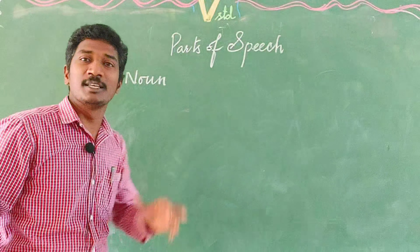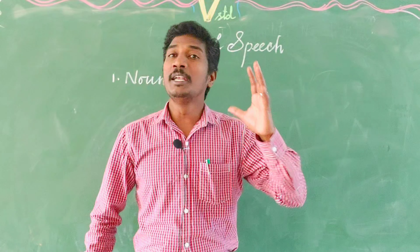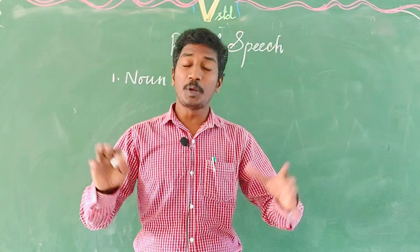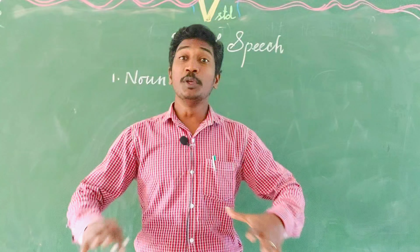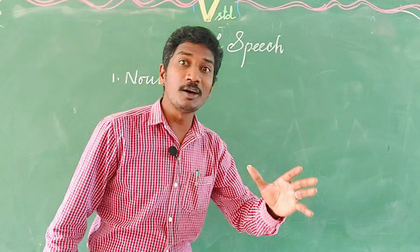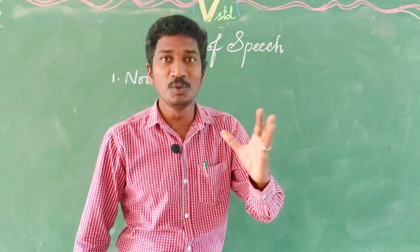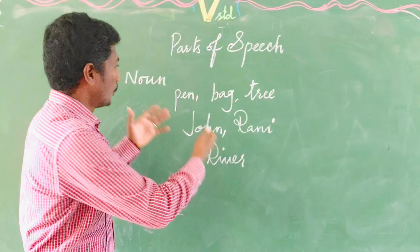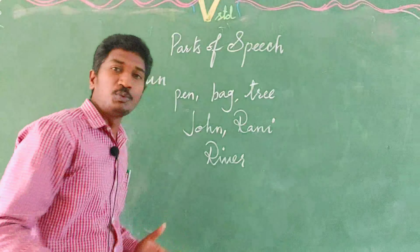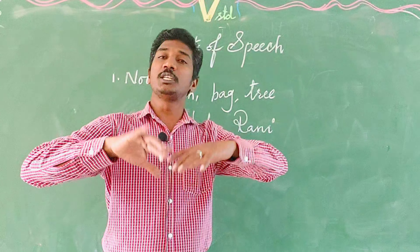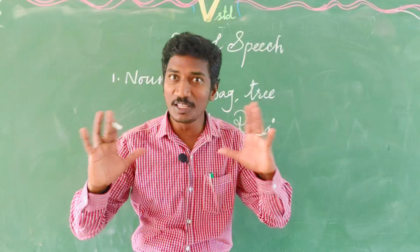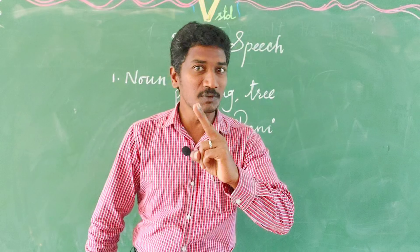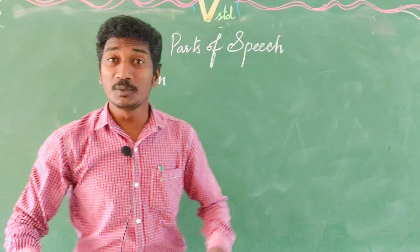The number one child is Noun. Noun is the name of anything — name of a person, places, things, animals. Whether it is a proper noun or common noun, whichever has a name in the world is called a noun. That is the naming word. For example: pen, bag, tree, John, Rony, river, table, road, bus — everything with a name is called a noun. This is the number one part of speech.